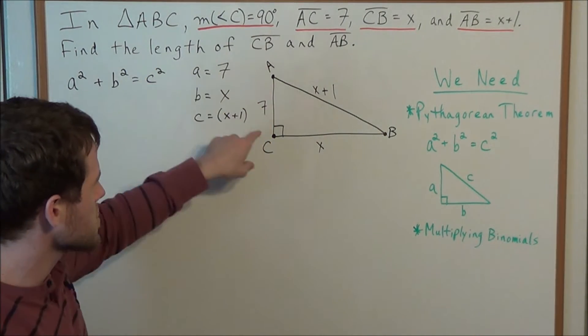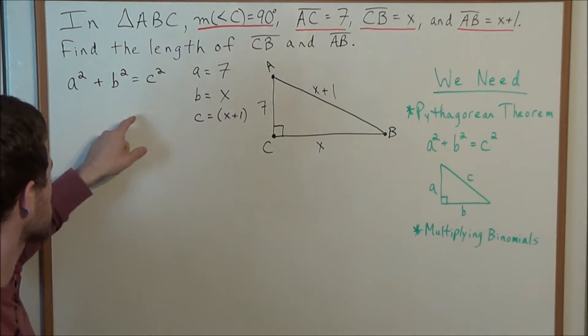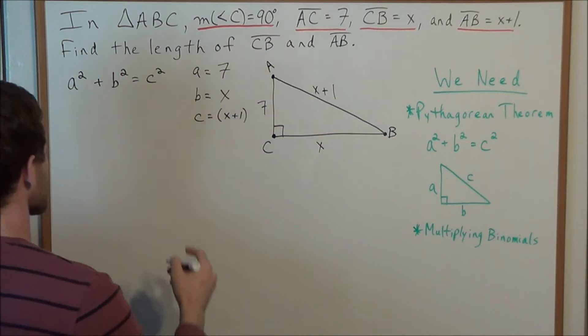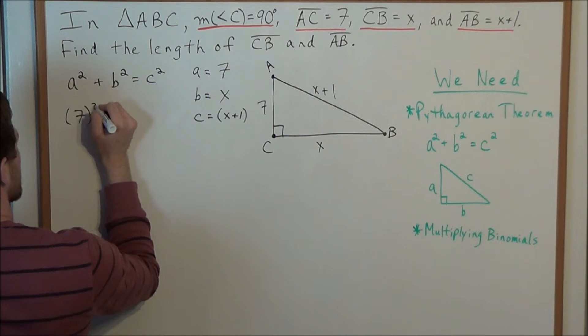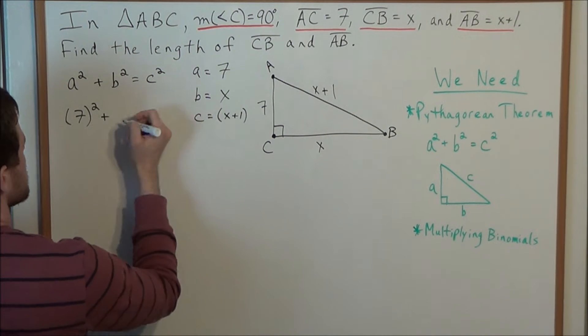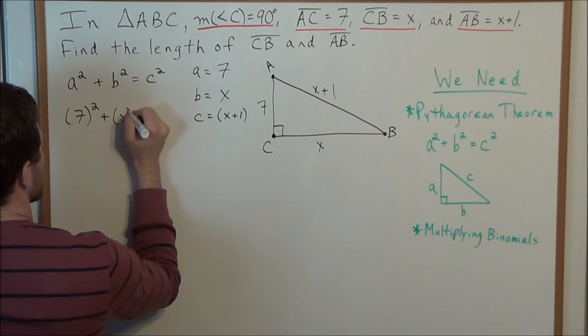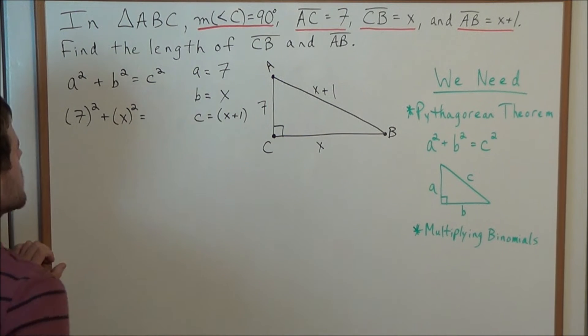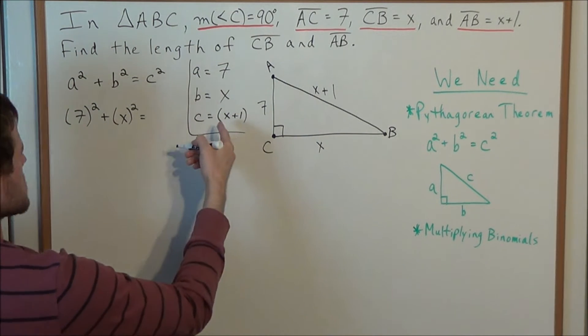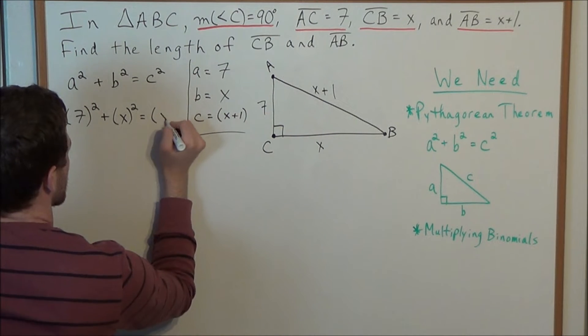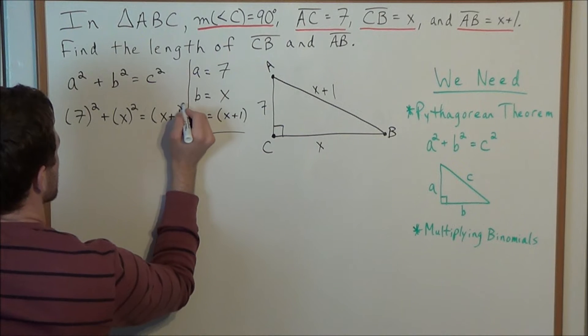So now that we have the three sides of this right triangle, we could substitute into the Pythagorean theorem. So we have A squared, but we could just substitute for 7. So we have 7 squared plus B is X, so we have plus X squared equals, and now C squared. Well, C equals X plus 1, so we're looking at X plus 1 squared.